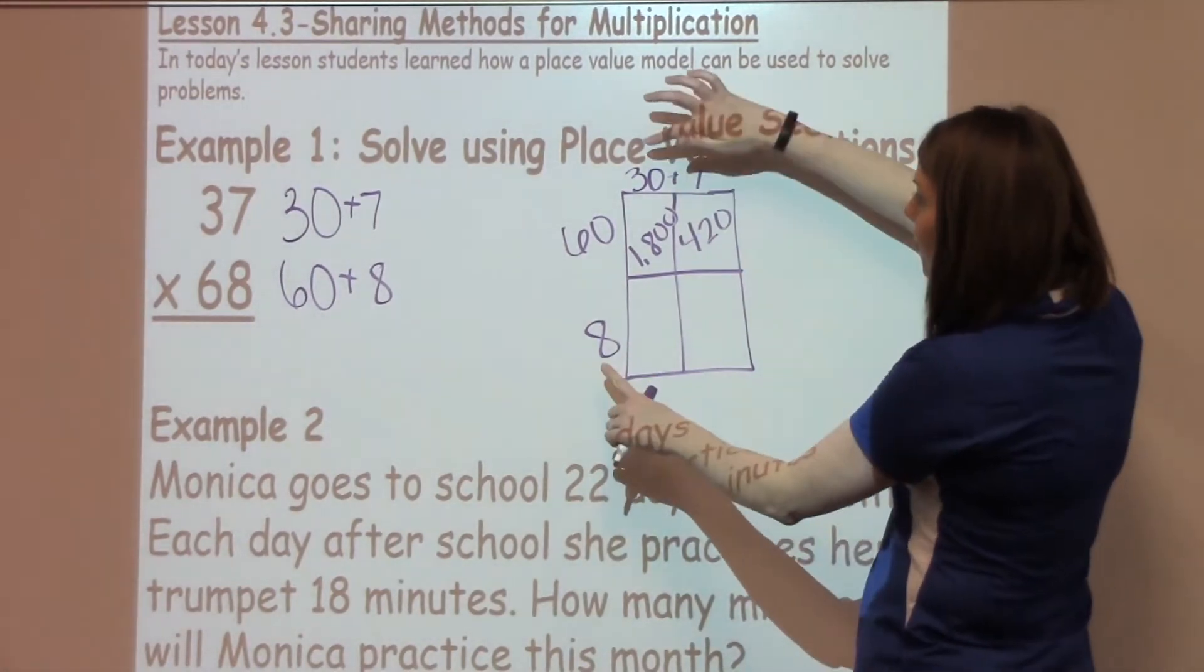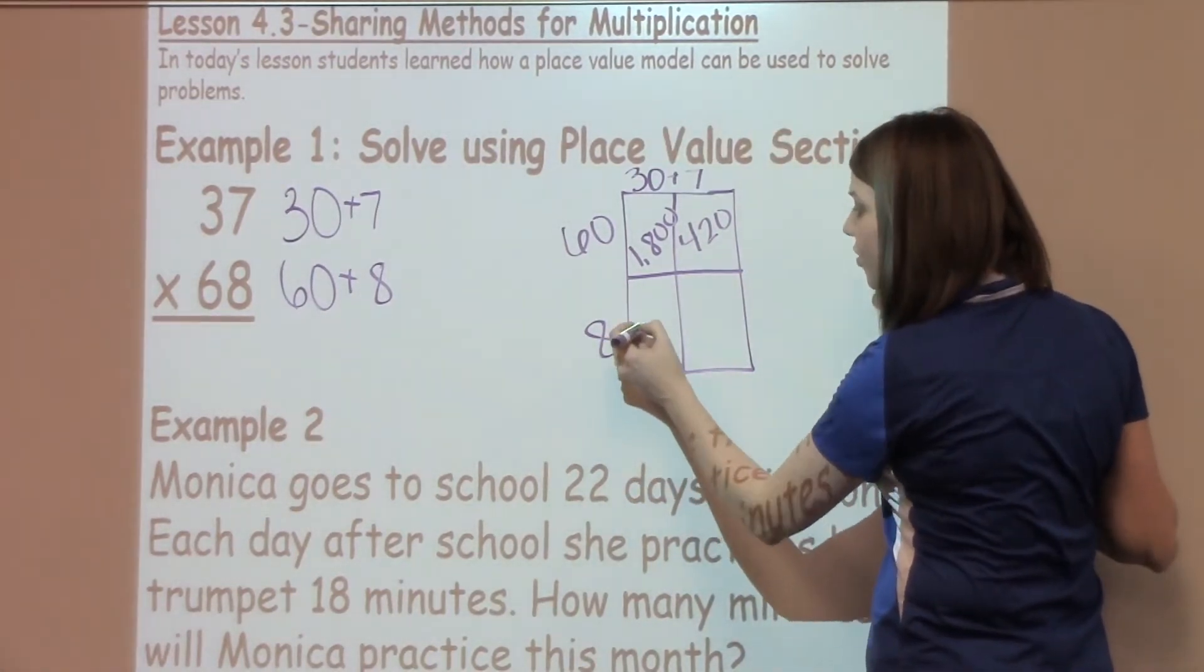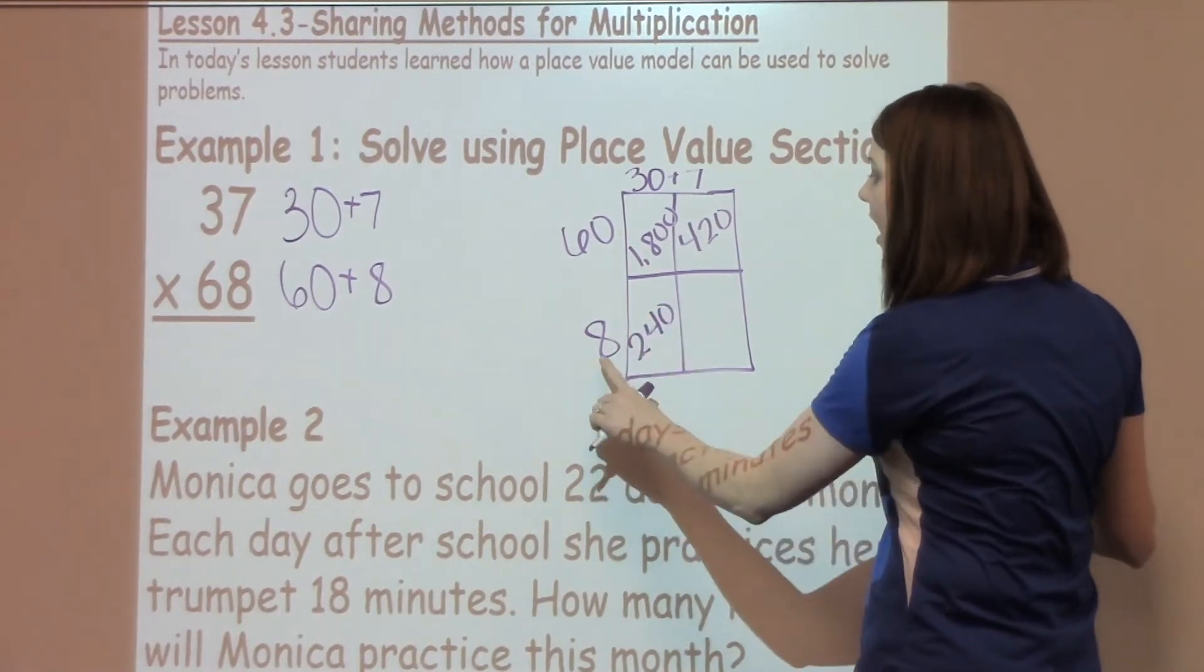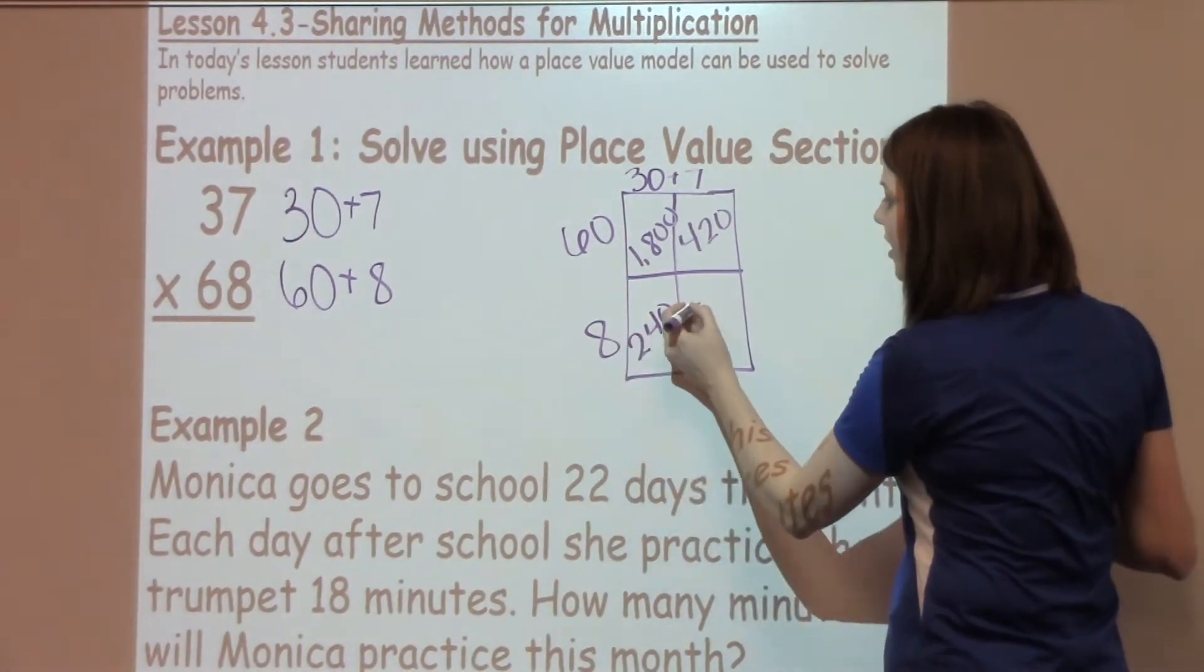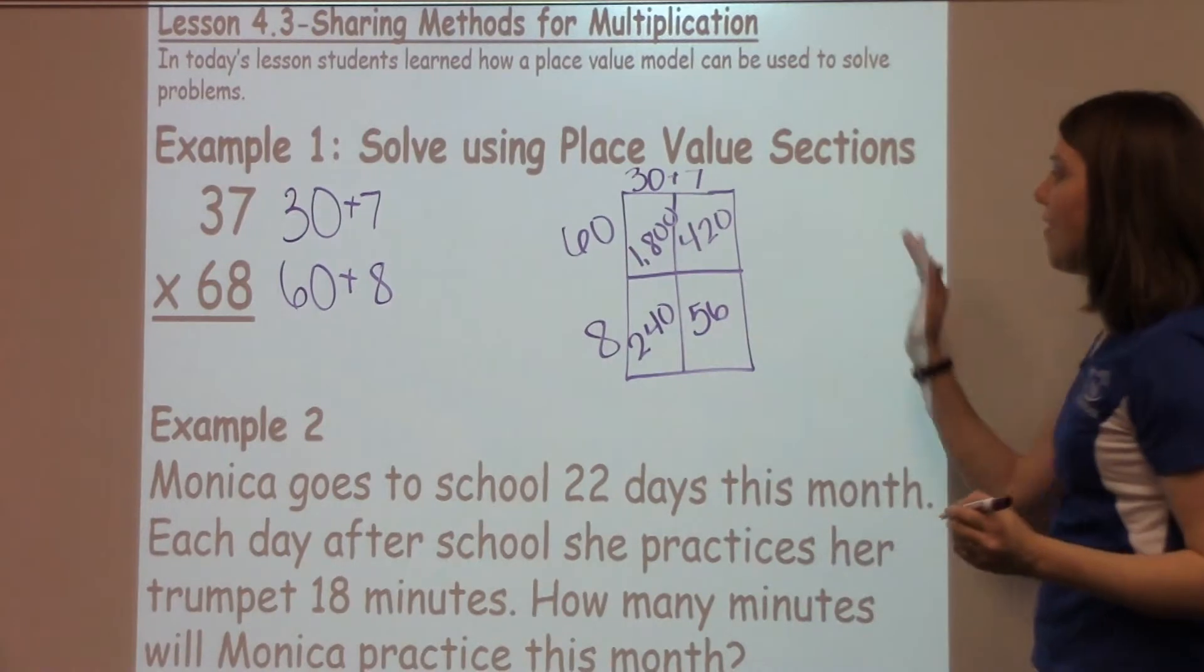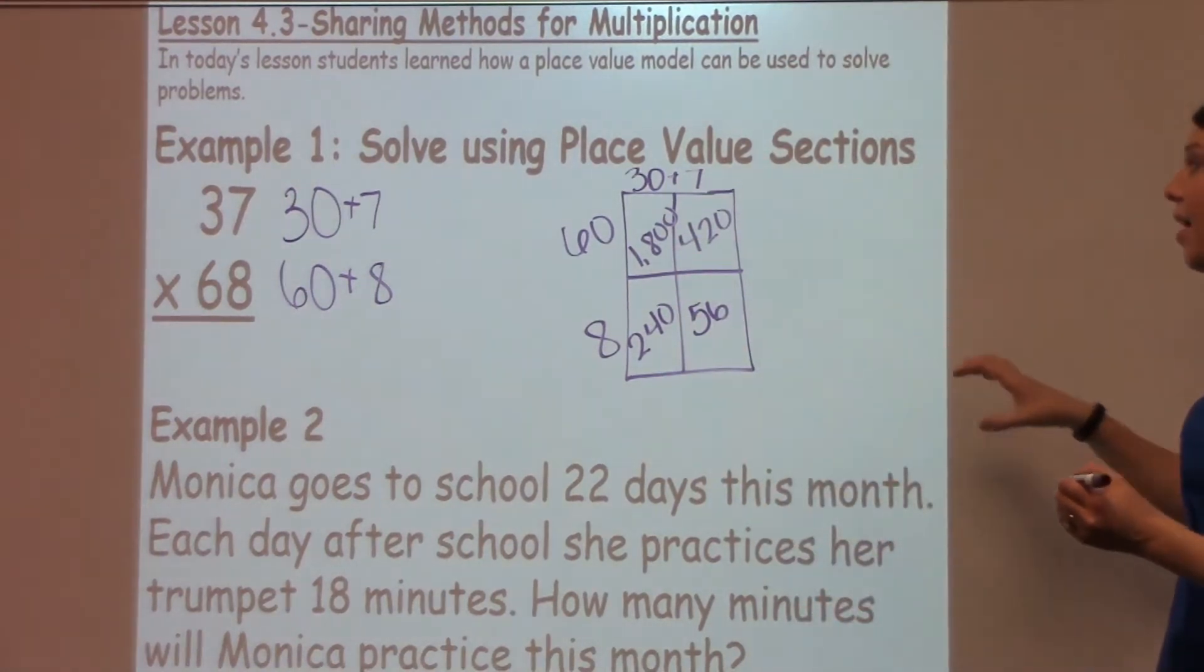Then I'm going to do 30 times 8, which is 240. And then I have 8 times 7, which is 56. Now after I have all these numbers inside my box, I'm just going to add them up.